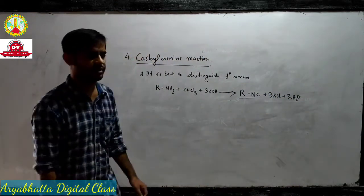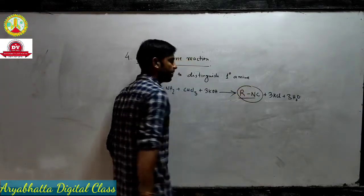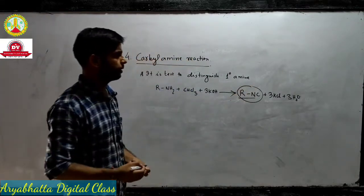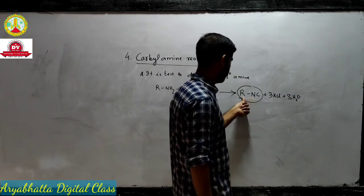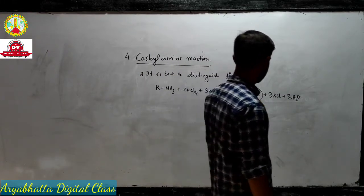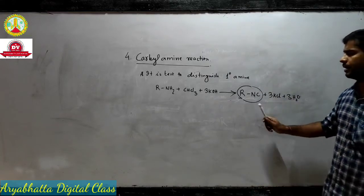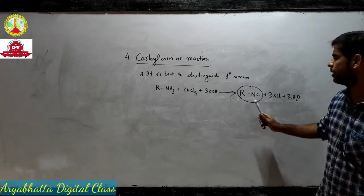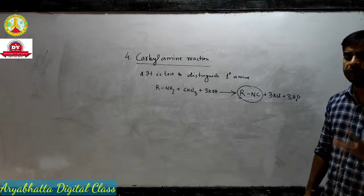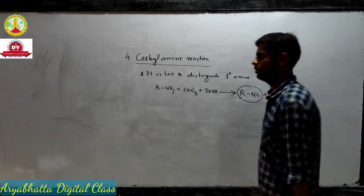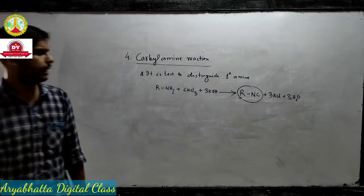This reaction is known as the carbylamine reaction, and the alkyl isocyanide produced has a very pungent smell. By the bad odor of this alkyl isocyanide, we can detect the presence of a primary amine.